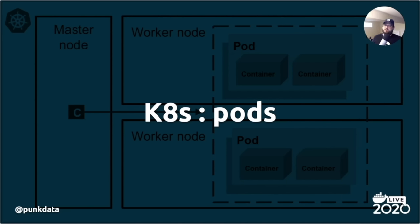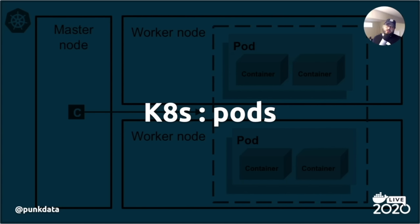Kubernetes pods are basically a grouping of your actual containers. If you have an application and want to run 10 instances in Kubernetes, a pod is an object in Kubernetes — like a label — that identifies that application. So you could have a Node.js application pod and have 10 instances within that pod. It's just a way for Kubernetes to keep track of specific application deployments.